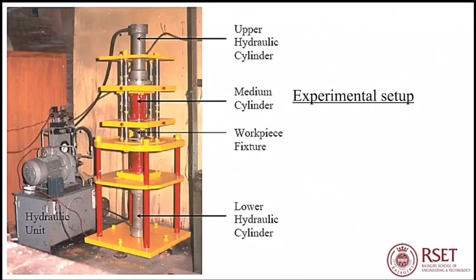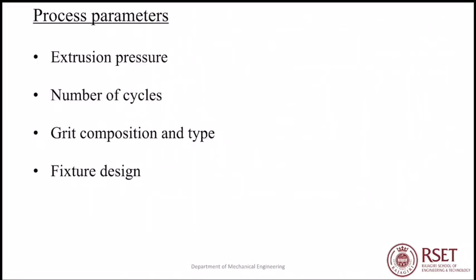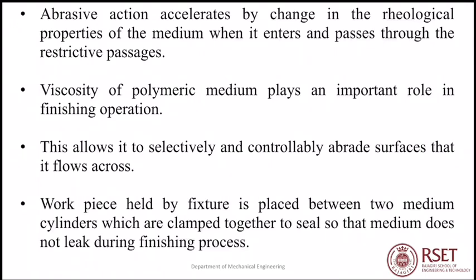Here we can see the experimental setup of an abrasive flow machine — an upper hydraulic cylinder, a lower hydraulic cylinder, the workpiece fixture, and a hydraulic unit that provides power for operation. The process parameters of AFM include extrusion pressure, number of cycles, grit composition and type, and fixture design. The abrasive action accelerates by changing the rheological properties of the medium when it enters and passes through the restrictive passage. Viscosity of the polymeric medium plays an important role in the finishing operation.